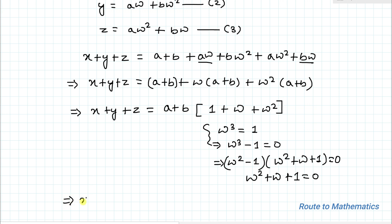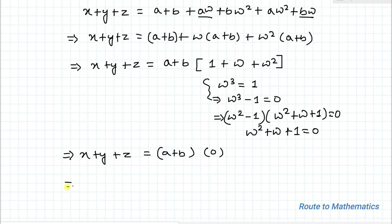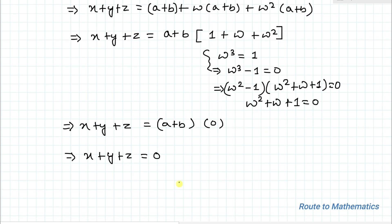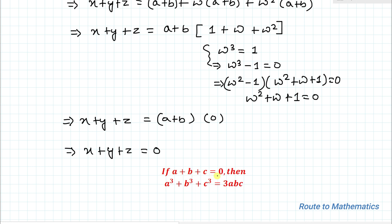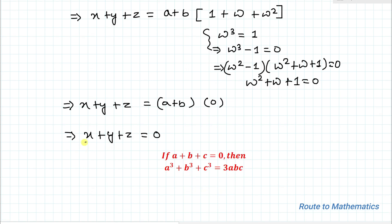Putting the value of omega squared plus omega plus 1 back, we have x plus y plus z equals (a plus b) multiplied with 0. So we get x plus y plus z equals 0. We also know the condition: if a plus b plus c equals 0, then a cubed plus b cubed plus c cubed equals 3abc.